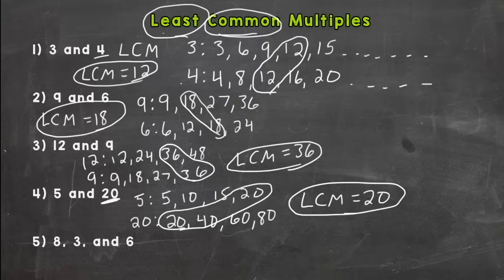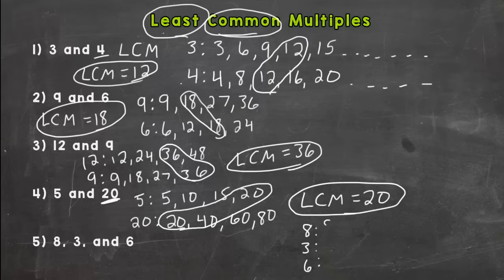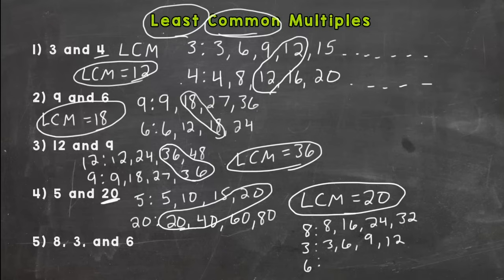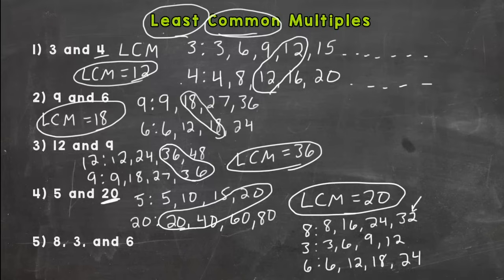Number five — we have three numbers, so you make three lists and find one number that all three have in common. We're finding the least common multiple between eight, three, and six. For eight: eight, sixteen, twenty-four, thirty-two. For three: three, six, nine, twelve. For six: six, twelve, eighteen, twenty-four. Let's see if we have any in common — it doesn't look like we do yet, so we need to extend our lists.